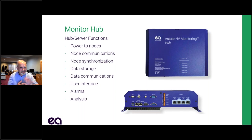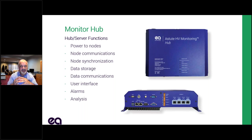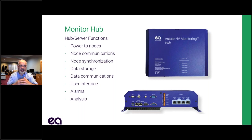The hub provides a number of functions. It powers up and communicates with all the nodes. Rather than running power to all nodes individually — which would be a wiring nightmare — we daisy chain all the nodes together and power them from the hub. The hub communicates with all the nodes, provides highly accurate clock signals that allow the nodes to synchronize within a nanosecond, and handles all the user interface. It gets the data back, stores it, and presents it in a way that you can look at for analysis.